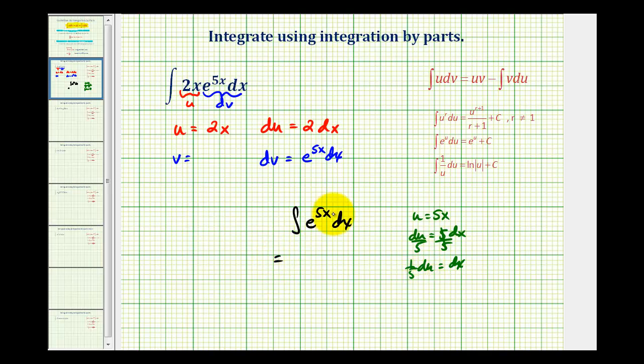So if we wrote this in terms of u, we would have the integral of e to the u, and then dx is 1/5th du. So we'd have 1/5th e to the u, or 1/5th e to the 5x. But we're going to leave the plus c off until the very end. So v is going to be 1/5th e to the 5x.